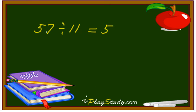5 times 11 is 55, so 57 minus 55, which is 2 left over. So 2 over 11. Great, so now, all you have to do...